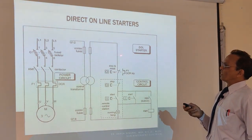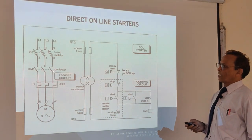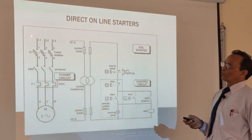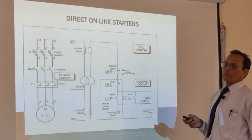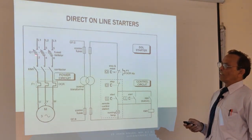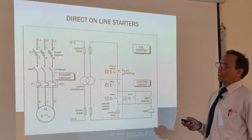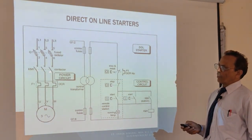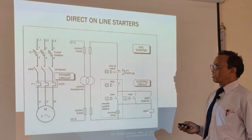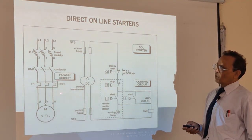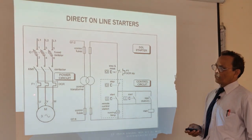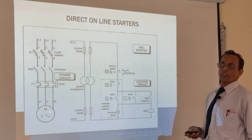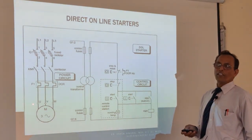Now when we look at this starter diagram, 440 volts is coming from the main switchboard. Then you have Q1, which is the fused isolator. Then you have all three phases and power is waiting at this point. This is KM1, the contactor coil. This is the overload relay or overcurrent relay. And then you have the three-phase 440 volt motor.